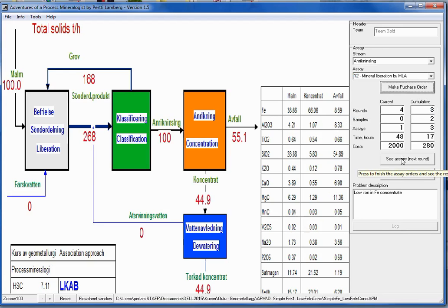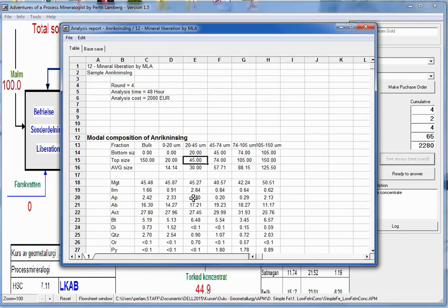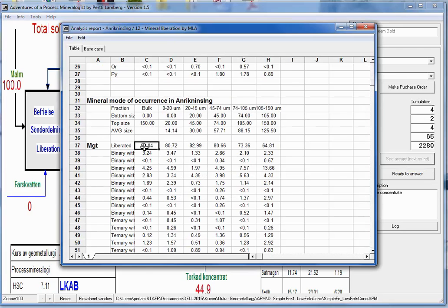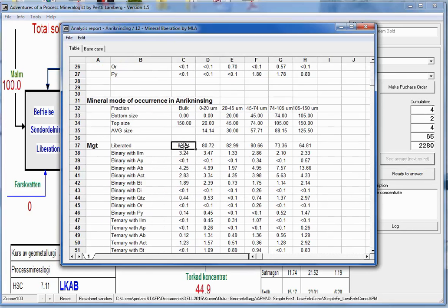Make the purchase order. See assay. And now we found out that the liberation, degree of liberation of magnetite, is 83. And now what is in the base case?